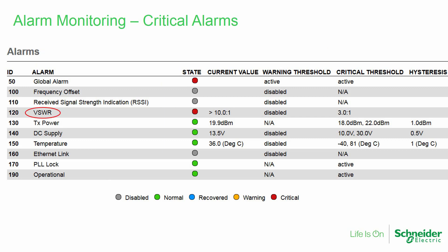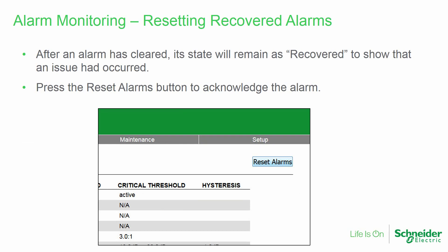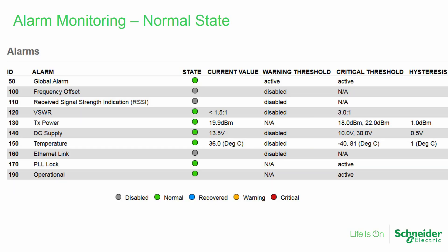Here it can be seen that a VSWR alarm has occurred. The state is red, or critical, with a current value of greater than 10 to 1 VSWR. Note that the critical threshold is 3 to 1, and that a global alarm condition occurs in such cases. The VSWR has since returned to normal with the value reported as less than 1.5 to 1 VSWR, and the alarm state is now showing as blue, or recovered. After an alarm has cleared, its state will remain displayed as recovered to show that an issue has occurred. The user may then press the reset alarms button on the alarms and events page to acknowledge having seen the alarm. Once the reset alarms button has been pressed, presuming no other alarms are currently active, the alarms display will appear with some alarms reported as disabled, including frequency offset and RSSI, though warning values may be enabled if desired. All other conditions show as green or normal.